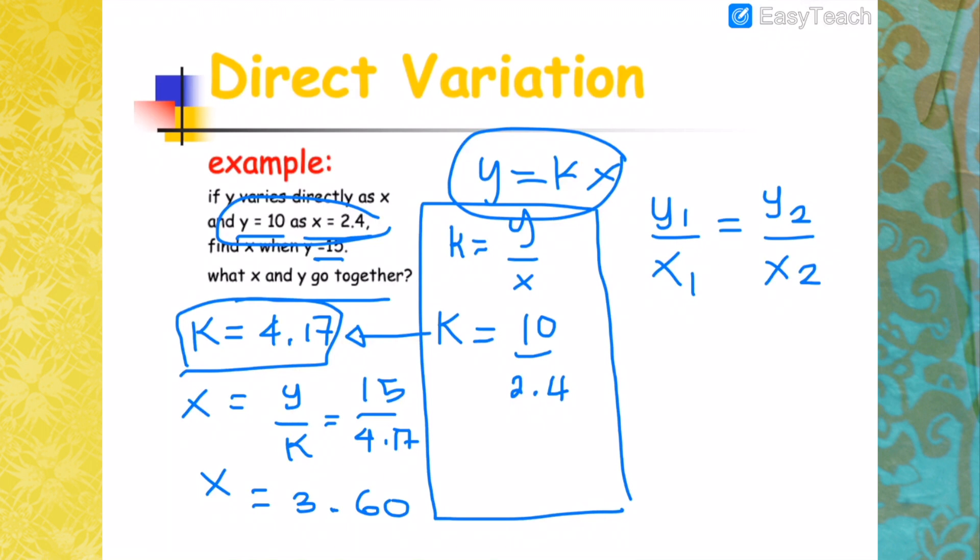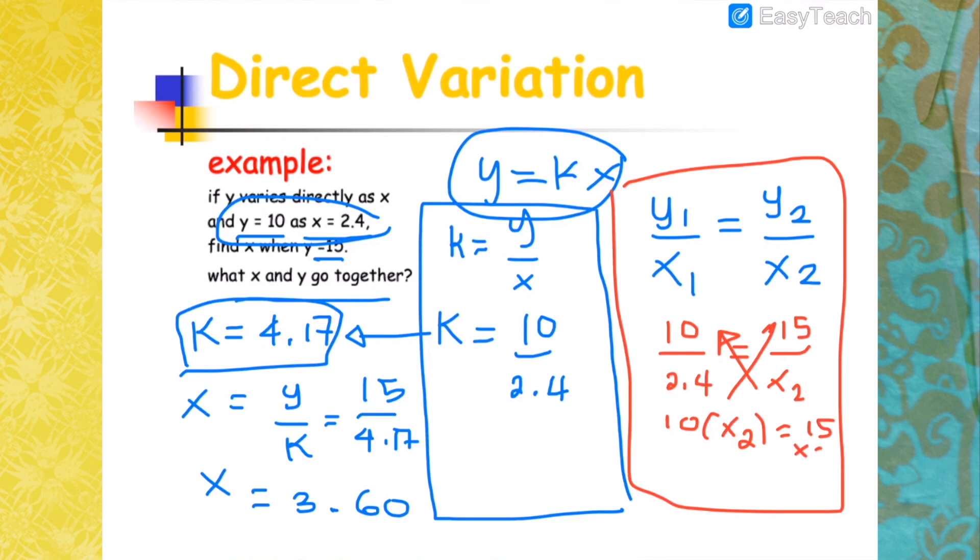If you would like to do it using the other method, you just need to substitute Y1, which is 10, over X1, which is 2.4, equals Y2, which is 15, over X2, which is unknown. Now you have to cross-multiply. When you cross-multiply, you bring X2 up, you bring 2.4 up. So this will be 10 times X2 equals 15 times 2.4. After you cross, you will have 15 times 2.4, you'll get 36.